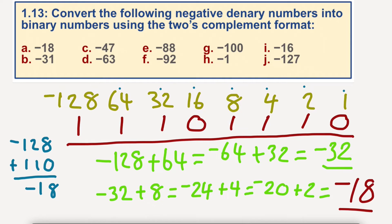We must put a 1 under the 128 in order for that to work, and then we're adding the consecutive numbers to it. It's not the easiest task, not the easiest task at all, but we'll do a couple more and see how we get on.